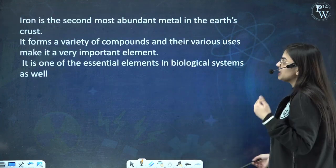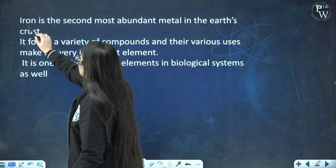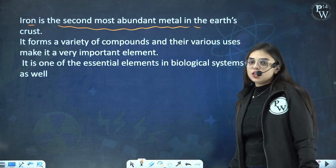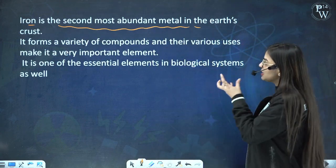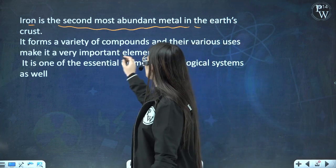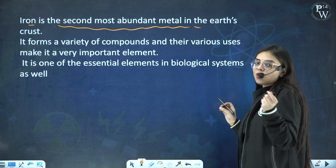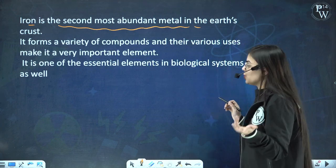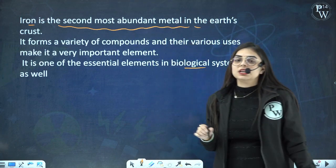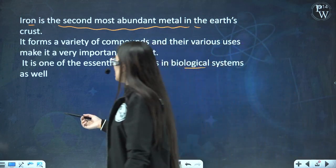Now talking about iron: Iron is the second most abundant metal in the earth's crust — note that the third most abundant element is aluminium, while iron is second most abundant metal. Iron forms a variety of compounds and their various uses make it a very important element. It is also one of the essential elements in the biological ecosystem.